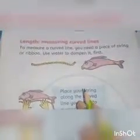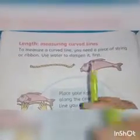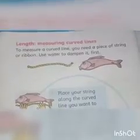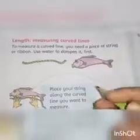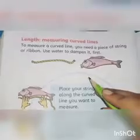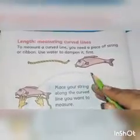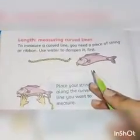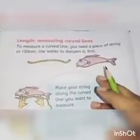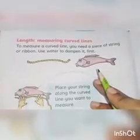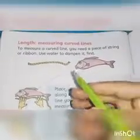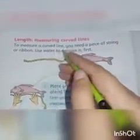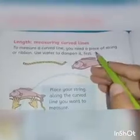Students, we are going to look at measuring curved lines. Do you know what a curved line is? A curve is a continuous and smooth flowing line without any sharp corners. A curved line is one that is not straight and is bent. Here we have the statement: to measure a curved line, you need a piece of string or ribbon.